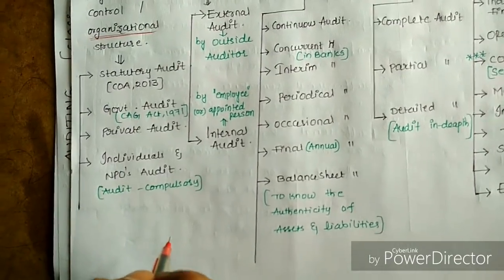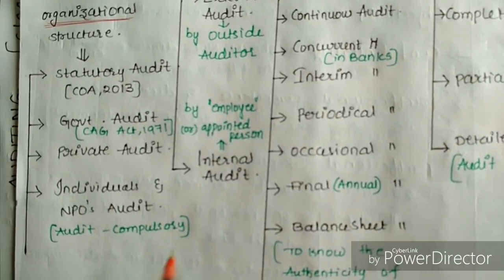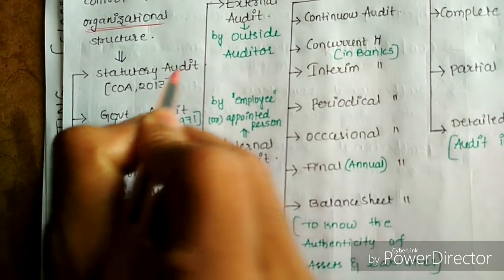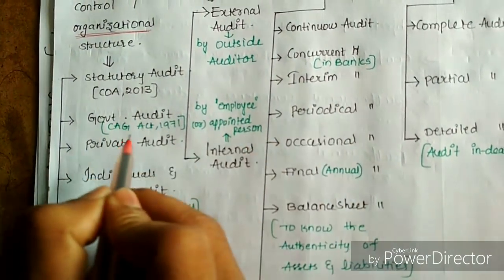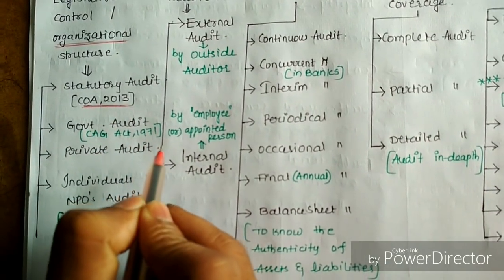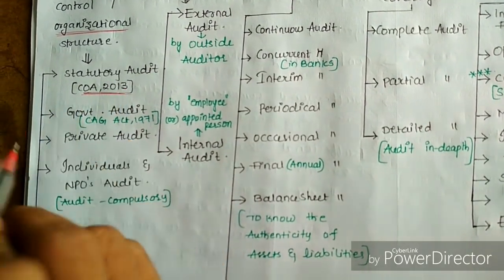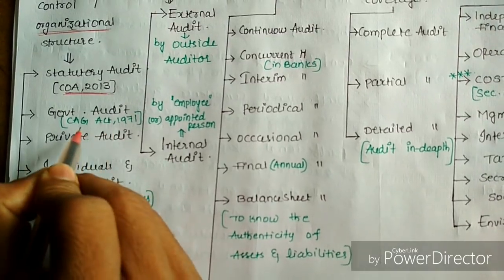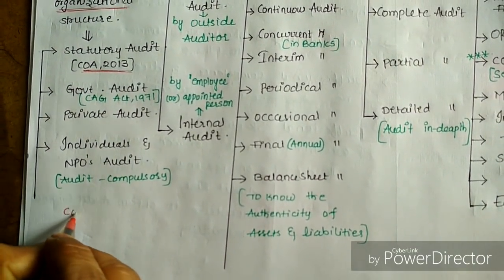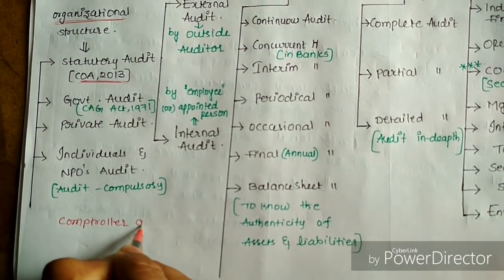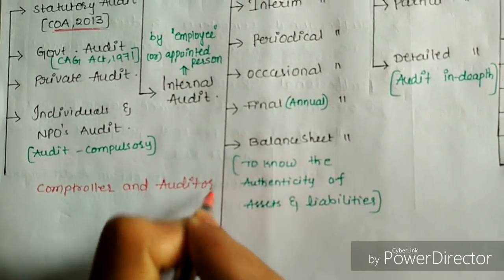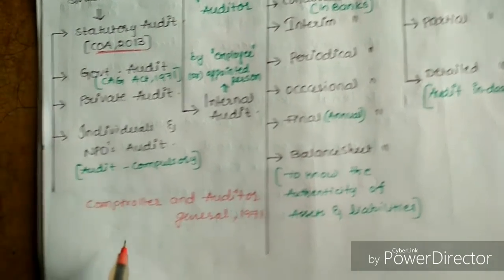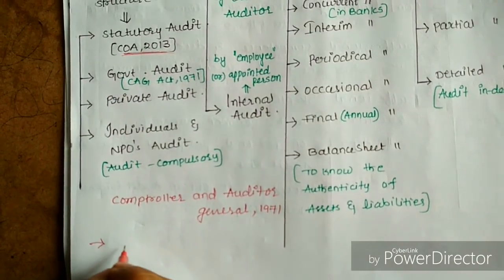With respect to individuals and NPOs, audit is compulsory as per auditing standards. Statutory audit is required as per the statute governing those organizations — either the respective statute or company law. As per the Companies Act 2013, the statutory auditor will be appointed. For government audit, government organizations follow the Controller and Auditor General of India, and this act came into force from 1971.